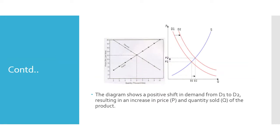In this graph, P denotes price, Q denotes quantity, and D denotes demand. This diagram shows a positive shift in demand from D1 to D2, resulting in an increase in both the price and quantity sold of the product.